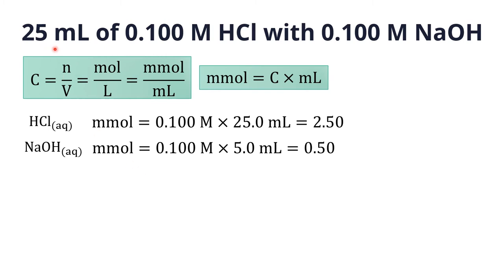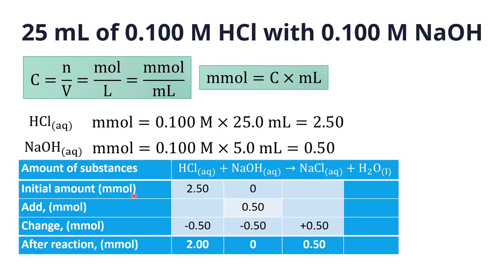We start with 25 mL of 0.1 M acid. Number of moles = concentration × volume. For HCl: 0.10 M × 25 mL = 2.5 mmol. For NaOH: 0.1 M × 5 mL = 0.5 mmol — this is the number used in the table.